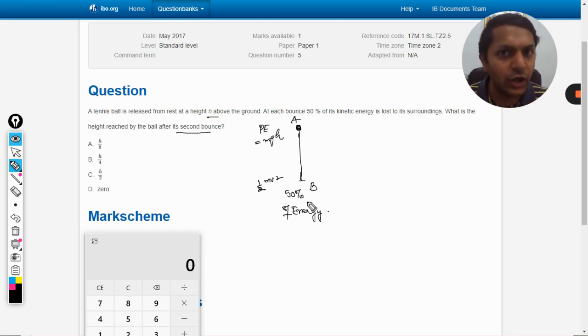So now only 50 percent is remaining. Obviously, with this much energy it would be going at half of the height. Why? Because earlier the energy was mgh, but after the bounce it is mgh by 2. Half of the energy is left with the body. The mass does not change, the gravity does not change, so height has to change. It means the body will go up to h by 2.